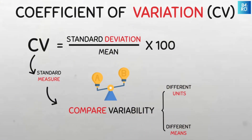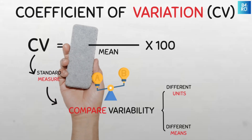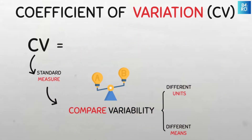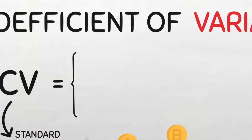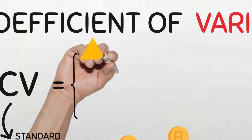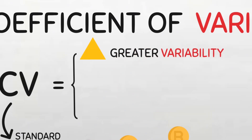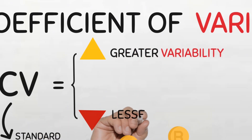Because we will divide each data set's standard deviation by its own mean, we have standardized a measure that now allows us to compare variability between data sets. So essentially, the coefficient of variation tells us how much spread or dispersion there is in a set of data relative to the average of that data. Thus, a higher coefficient of variation indicates greater variability relative to the mean, while a lower coefficient of variation suggests less variability.